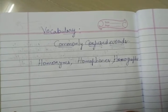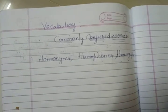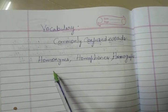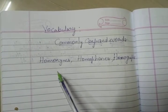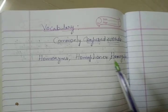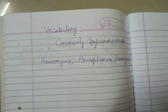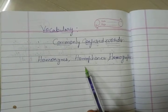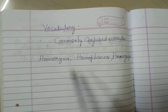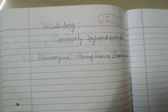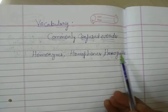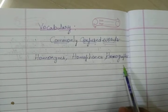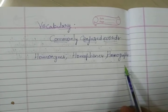Look at here. Homonyms — words that have the same spelling and the same pronunciation but different meanings. And look here, Homophones — words that have the same pronunciation but different spellings and different meanings. And Homographs — words that have the same spelling but different pronunciation and meanings.